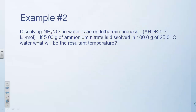In this next example, we are told we're going to dissolve ammonium nitrate in water, and we're also told that this is an endothermic process. We can see this because delta H is a positive 25.7 kilojoules per mole — a positive sign means endothermic. We're asked to imagine putting 5 grams of ammonium nitrate and dissolving it in 100 grams of water at room temperature, and we're asked to find the resultant temperature.